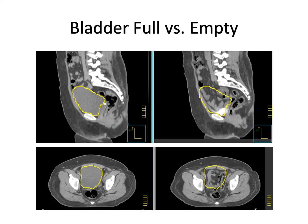We talked about full bladder versus empty bladder — this is a very dramatic example. You can see the bladder contoured in yellow: on the left pictures, both sagittal and axial, the bladder is completely full. On the right pictures, the patient has used the bathroom, and what falls into place is all the intestines. Instructing your patient to come to sim and subsequent treatments with a full bladder will allow the intestines to be pushed up out of the pelvis and can significantly decrease both acute and late toxicity.